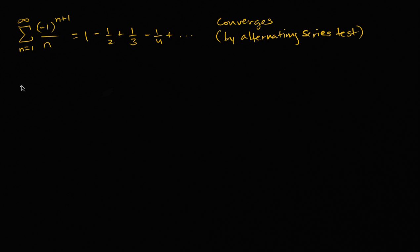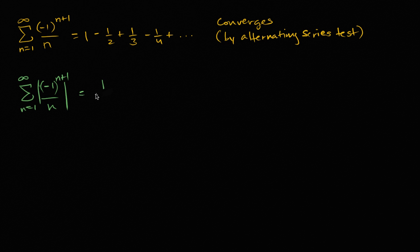If you were to take the absolute value of each of these terms — the sum from n equals one to infinity of the absolute value of negative one to the n plus one over n — the numerator is either one or negative one, so its absolute value is always one, and n is always positive. So this equals the sum from n equals one to infinity of one over n, which is just the famous harmonic series.